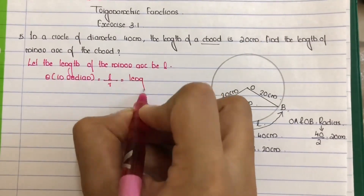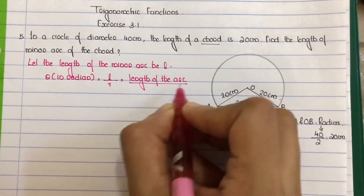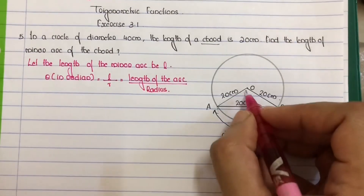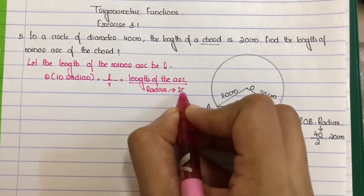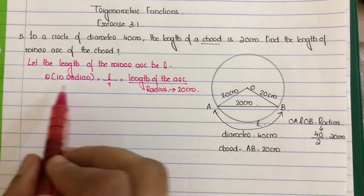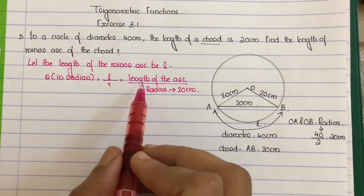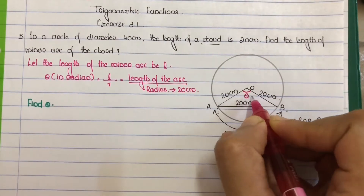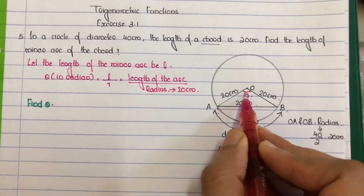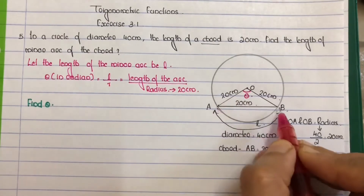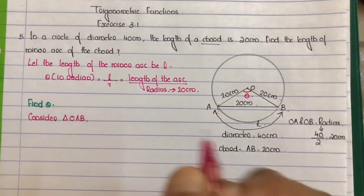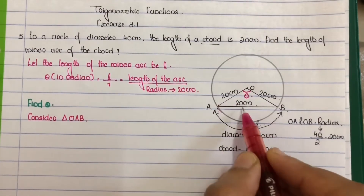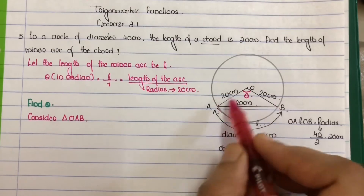The arc length formula is: L equals theta times radius, where radius of the circle is 20 centimeters. Now, AB equals 20 centimeters, OA equals 20 centimeters, and OB equals 20 centimeters. Since the length of the chord AB is 20 centimeters, all sides are equal.